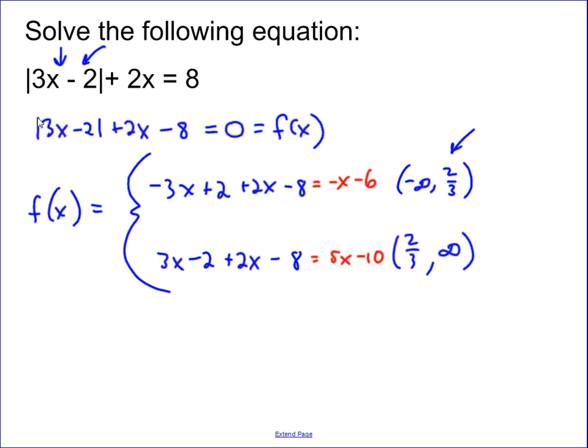So now we can find the zeros. When is negative x minus 6 equals 0? Well, that's true at x equals negative 6. And when does 5x minus 10 equal 0? That's true when x equals 2.